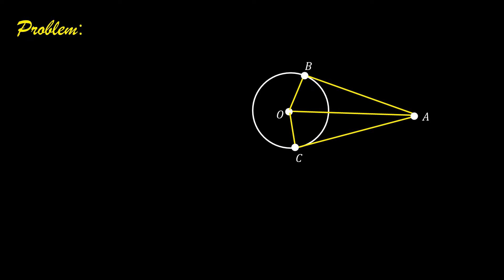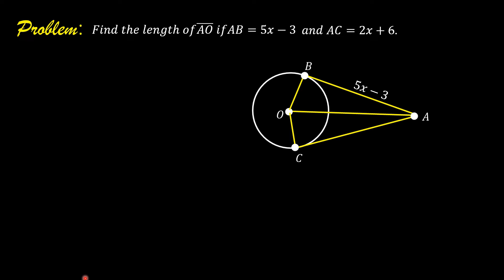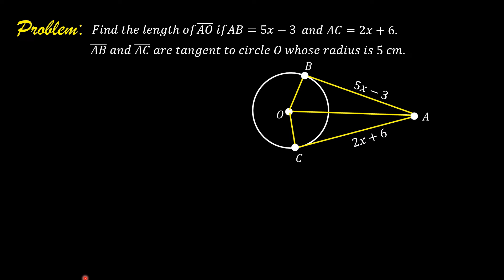Let us solve this problem. Find the length of segment AO. If AB is equal to 5X minus 3 and AC is equal to 2X plus 6, and segment AB and segment AC are tangent to circle O whose radius is 5 centimeters.